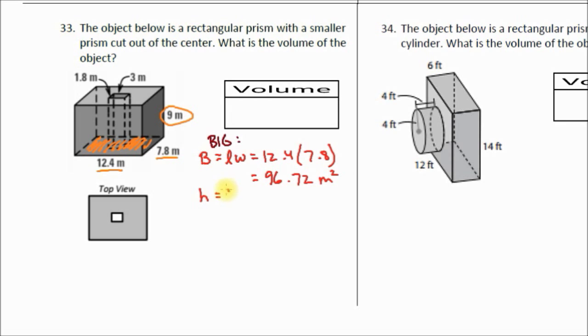I've already circled the height, which is 9 meters. That means the volume of my larger prism is base area times height, which is 96.72 times 9, and that's going to be equal to 870.48 meters cubed. So there is my volume of my larger rectangular prism.